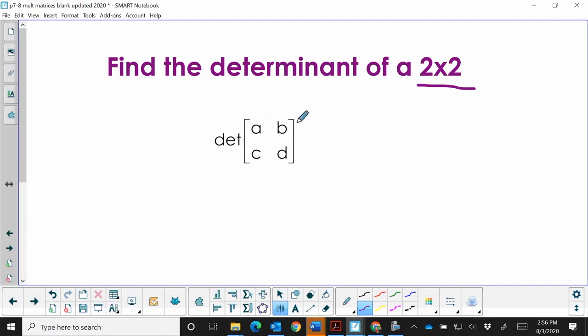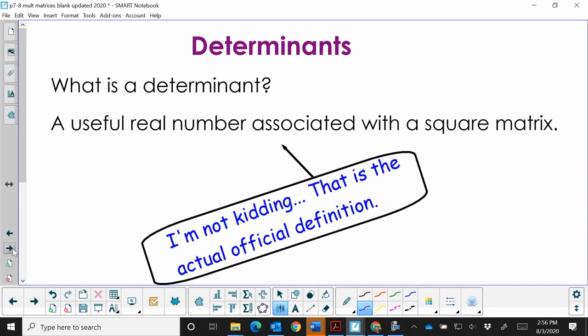So what is a determinant? Well, a determinant is a very useful number that we associate with a square matrix. In order to find a determinant, it has to be square, meaning it has to be a two by two or a three by three or four by four.